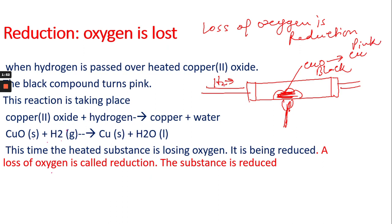So in this case copper(II) oxide is reduced into copper. The reaction is copper(II) oxide plus hydrogen converts into copper plus water. CuO(s) + H2(g) → Cu(s) + H2O(l). So copper(II) oxide is reduced into copper. So it's a kind of reduction reaction. But at the same time hydrogen is oxidized into water.